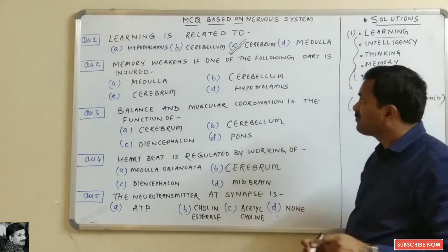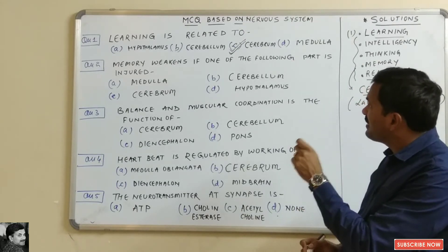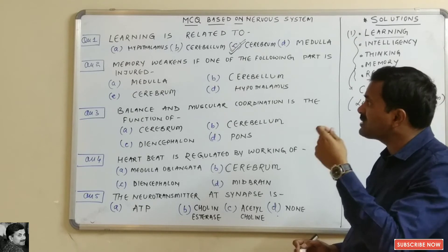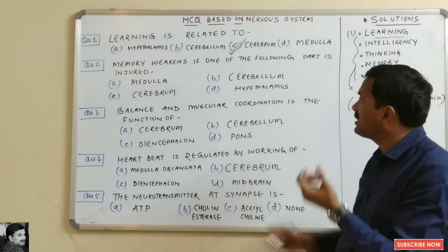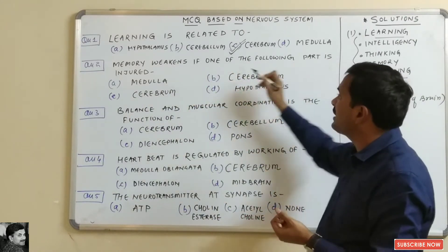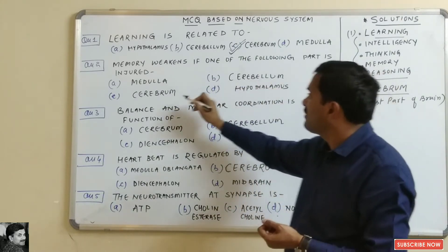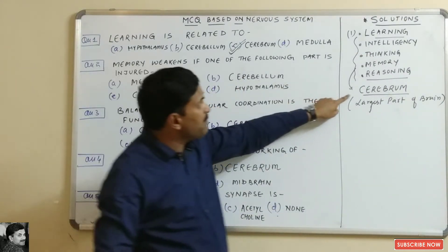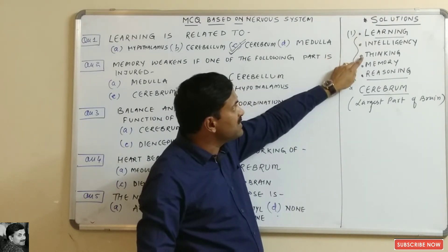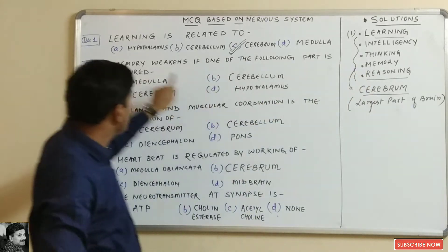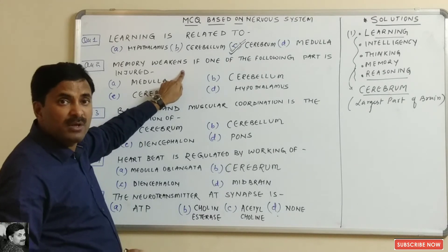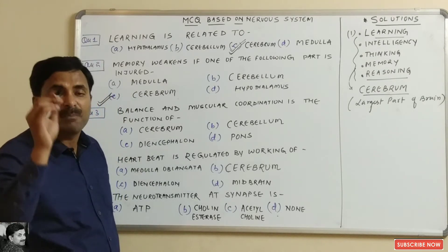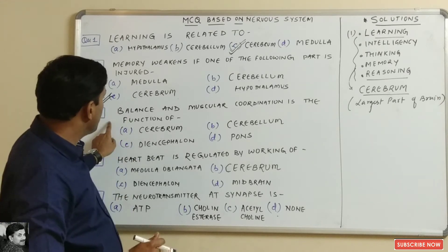The second question is: memory weakens if which of the following parts is injured — medulla, cerebellum, cerebrum, or hypothalamus? As noted, the cerebrum is responsible for learning, intelligence, thinking, and memory. So if the cerebrum is injured, the person's memory will become weak and they will not be able to memorize things.